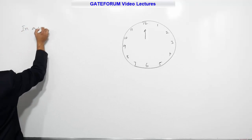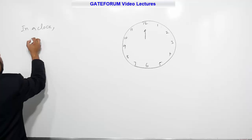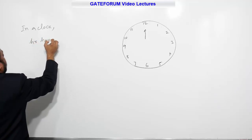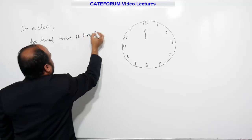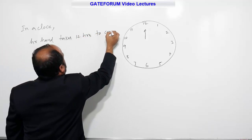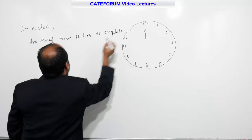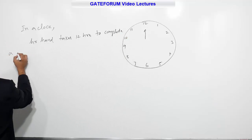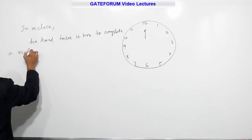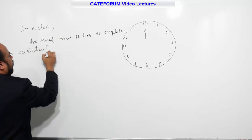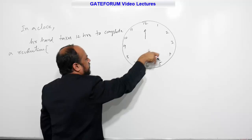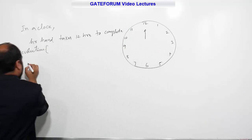In a clock, hour hand takes 12 hours to complete a revolution. Revolution is nothing but one full round. That means it will move 360 degrees in 12 hours. So I will write now.